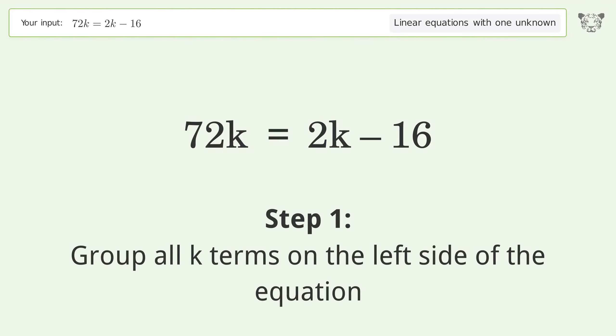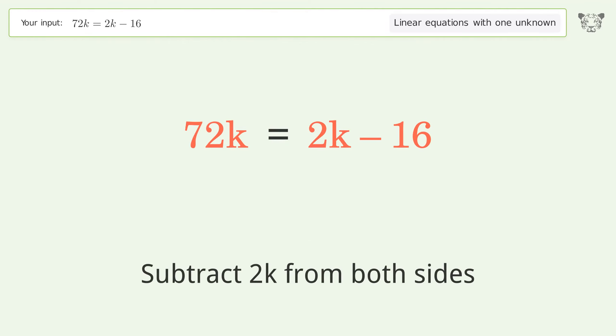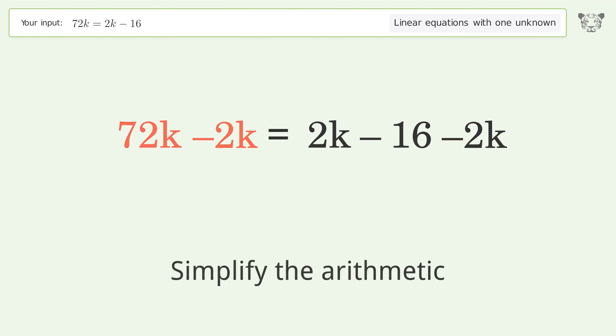Group all k terms on the left side of the equation. Subtract 2k from both sides. Simplify the arithmetic.